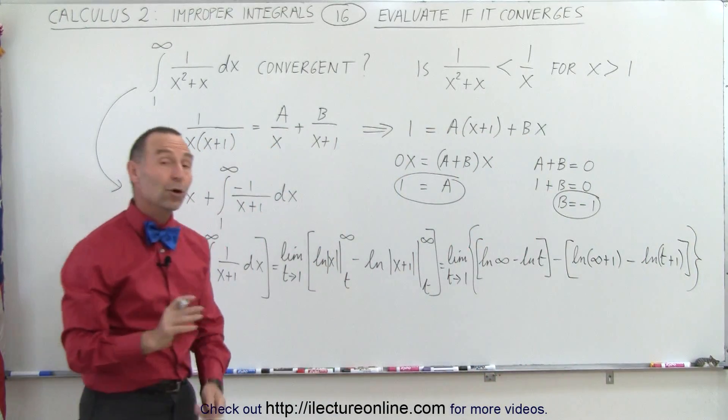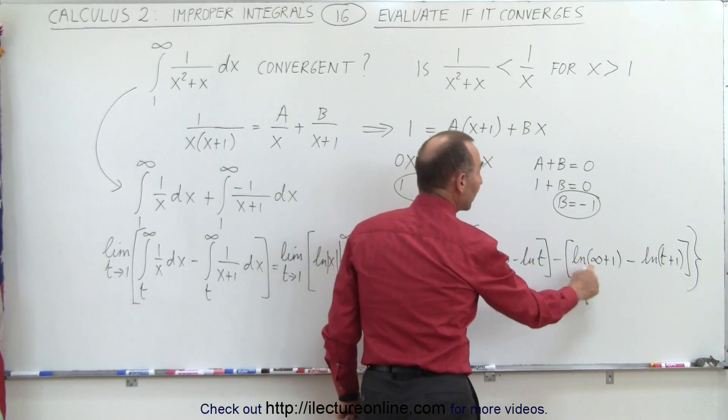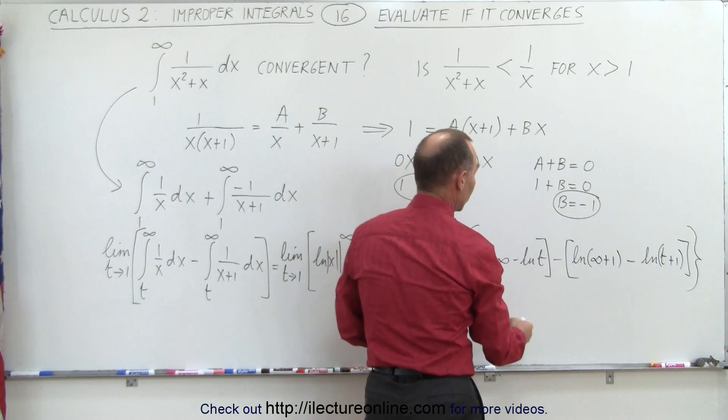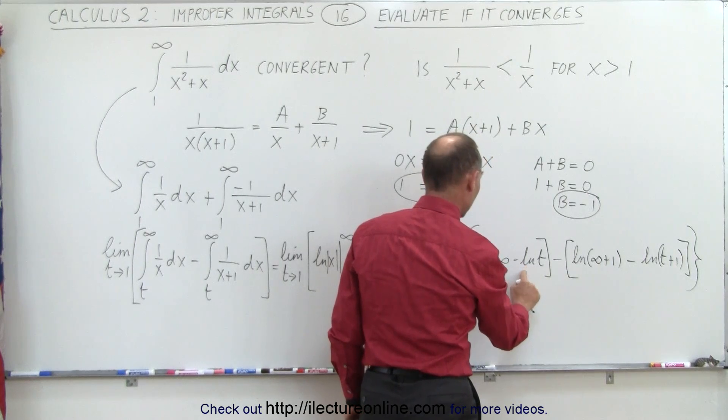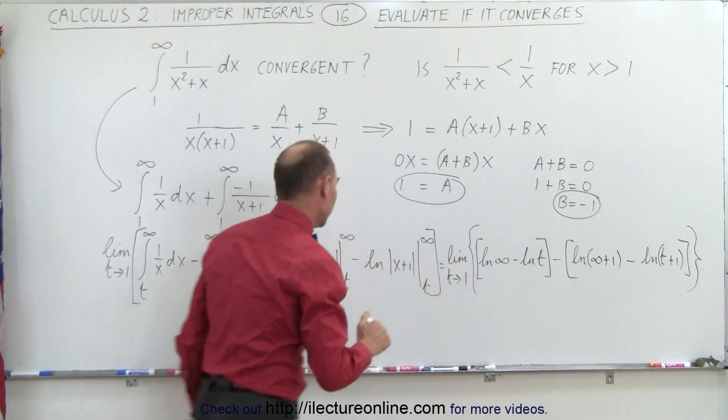Now notice, we have the natural log of infinity minus the natural log of infinity plus 1. So that means that these two cancel each other out, and what we have left is minus the natural log of t and plus the natural log of t plus 1.